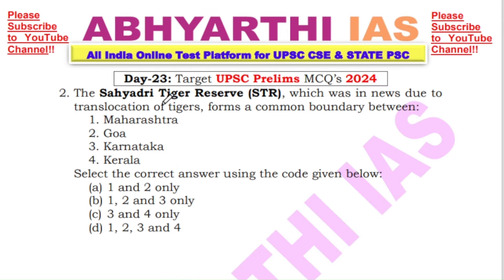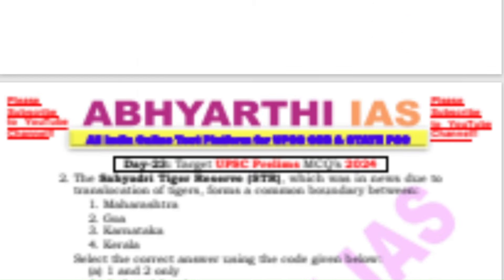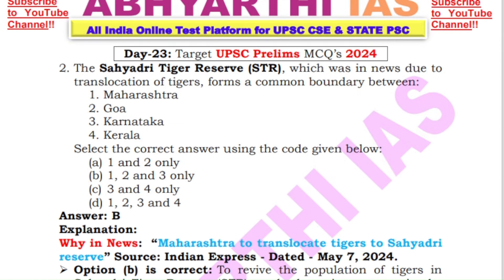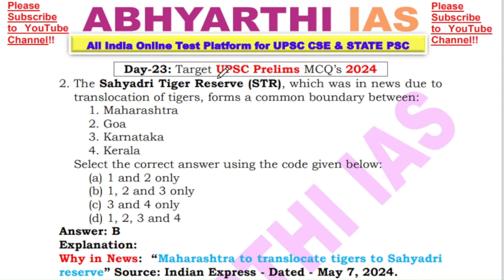Next question: The Sahyadri Tiger Reserve, which was in news due to the translocation of tigers, forms a common boundary between which states — A) Maharashtra and Goa, B) Maharashtra, Goa and Karnataka, C) Maharashtra, Goa, Karnataka and Kerala? The answer is B — Sahyadri Tiger Reserve forms a boundary between Maharashtra, Goa and Karnataka.